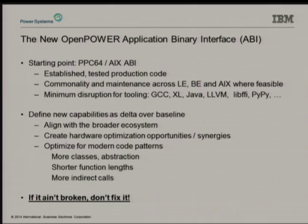The OpenPOWER ABI started with the PowerPC 64-bit ABI used on big-endian Linux and AIX — a high-performance, established ABI with stable production code enabling shared maintenance and code optimization between different Power environments. New capabilities were defined as a delta over that baseline, aligning with a broader ecosystem to give programmers from other systems immediate familiarity, creating hardware optimization opportunities, and optimizing for modern code patterns such as more classes, more data abstraction, shorter function lengths, and more indirect function calls through virtual functions.